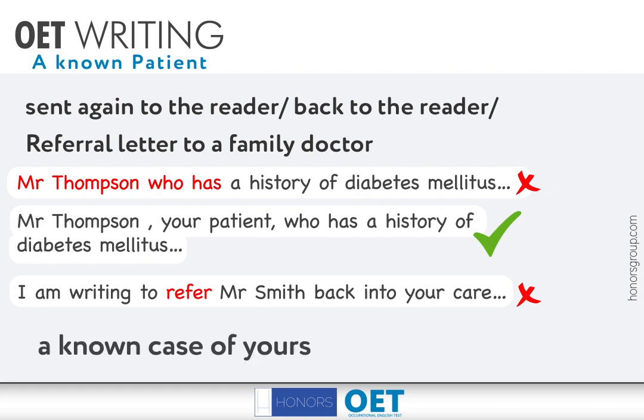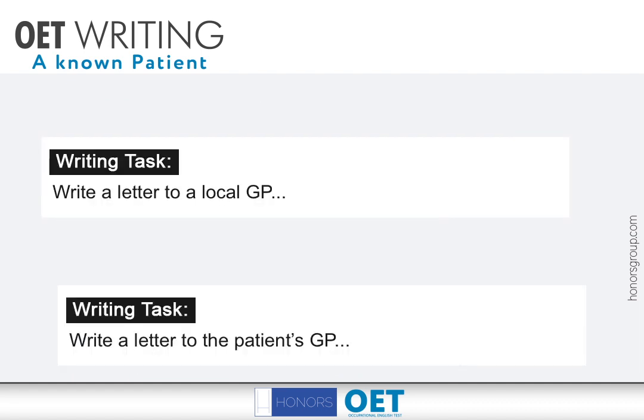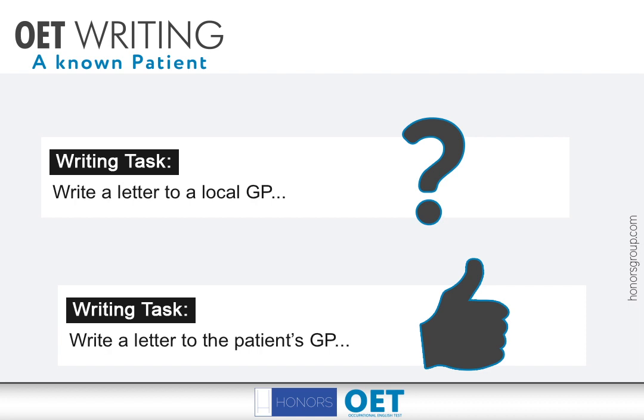Also, remember, 'a known case of yours' is not a common phrase that is used in English. Suppose in the writing task you read 'write a letter to a local GP' — this does not necessarily mean that the GP knows the patient. On the other hand, if in the writing task they say 'write a letter to the patient's GP', this indicates the patient is known to the reader. So in short, what I'm trying to say is: read your writing task and case note properly, and then plan how your letter has to be.